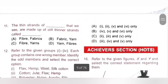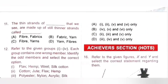Eleventh question: The thin strands of dash that we see are made up of still thinner strands called dash. The thin strands of yarn that we see are made up of still thinner strands called fibers. Option D, Yarn–Fibers, is the correct answer.